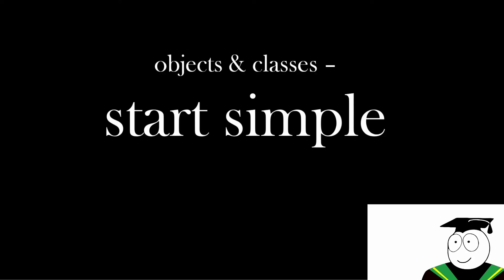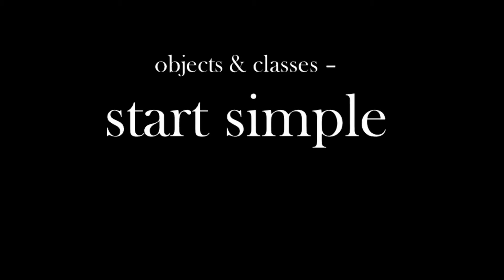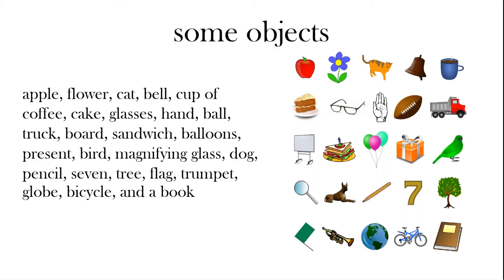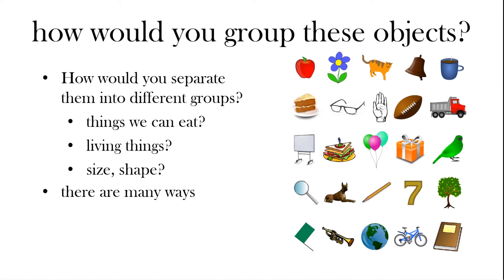Objects and classes. Let's start simple. Here we've got a collection of objects, their name is written on the left. How would you group these objects? You could put them in things we eat, for example, living things, or even by the size and shape. There are different ways we can categorize these objects.